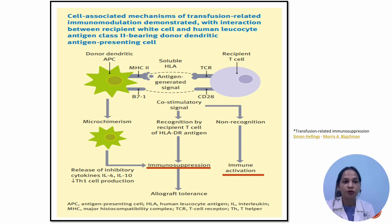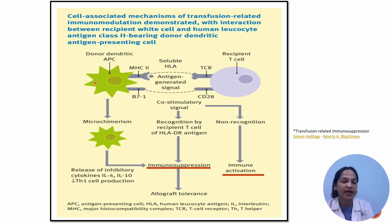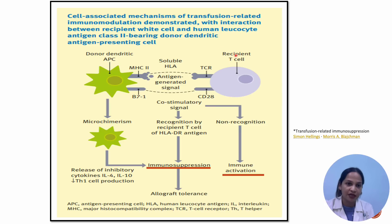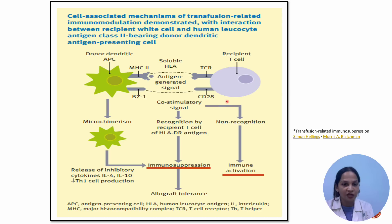The first mechanism is allogeneic mononuclear cell mediated. When there is an allogeneic blood transfusion, there is an interaction between the patient's T cell and the donor dendritic antigen presenting cell with MHC class 2 on their surface. This interaction is completely dependent on HLA compatibility between patient and donor cell, the donor blood characteristics, and the patient's immune or inflammatory status. If there is at least one matching between MHC class 2 and the patient cell, there is a co-stimulatory signal leading to immunosuppression and allograft tolerance. But if there is no matching at all, there is immune activation or inflammation in the patient.